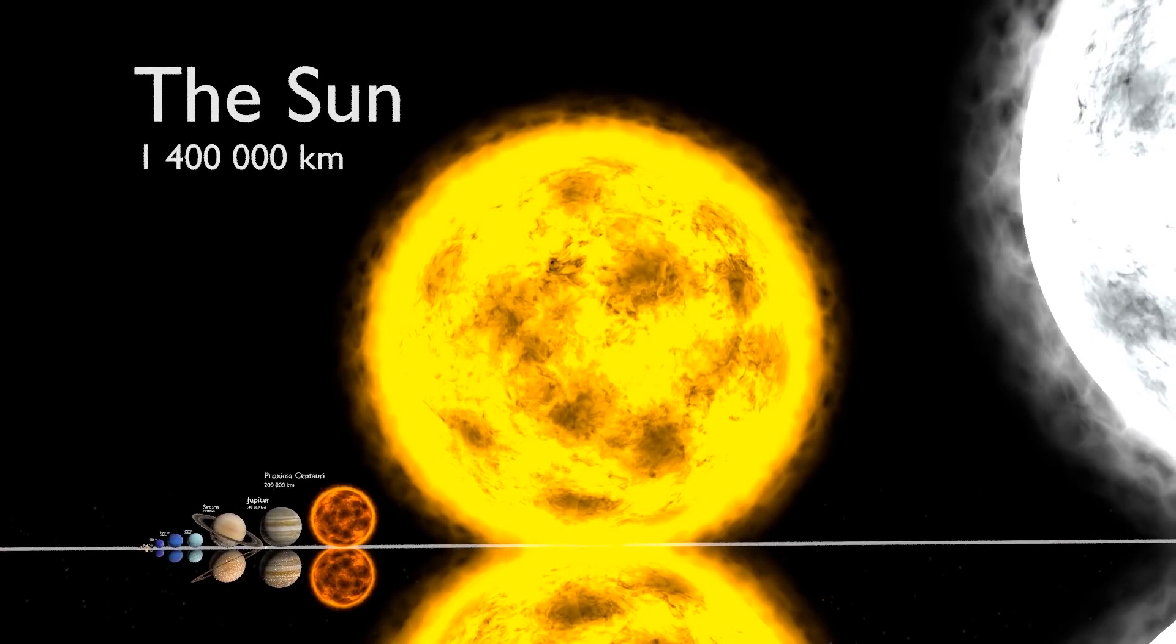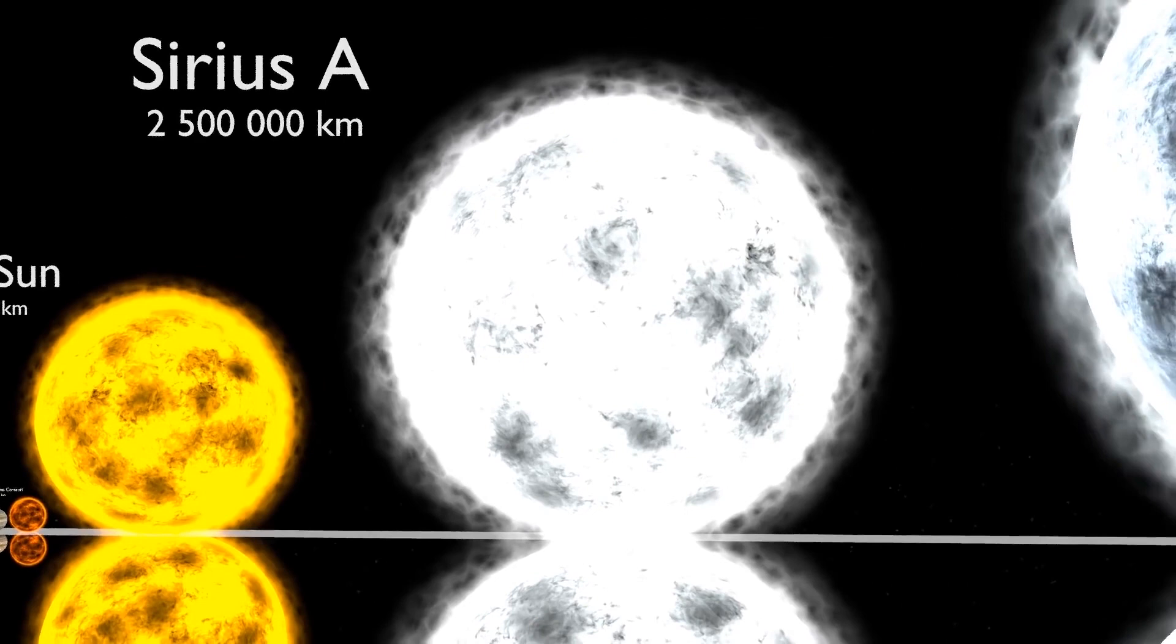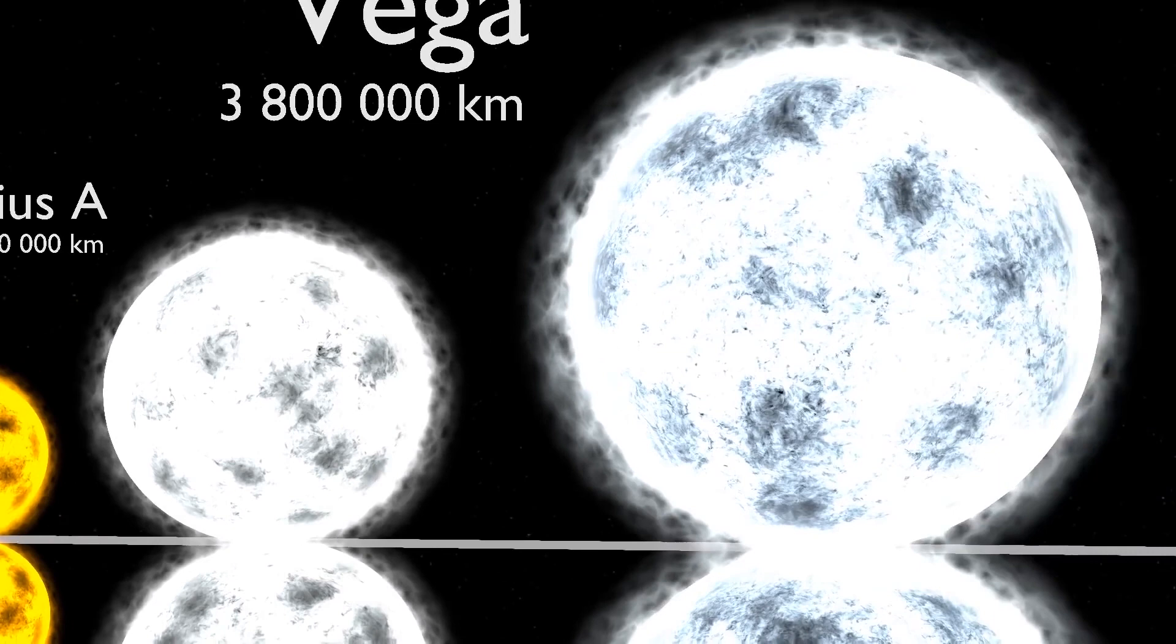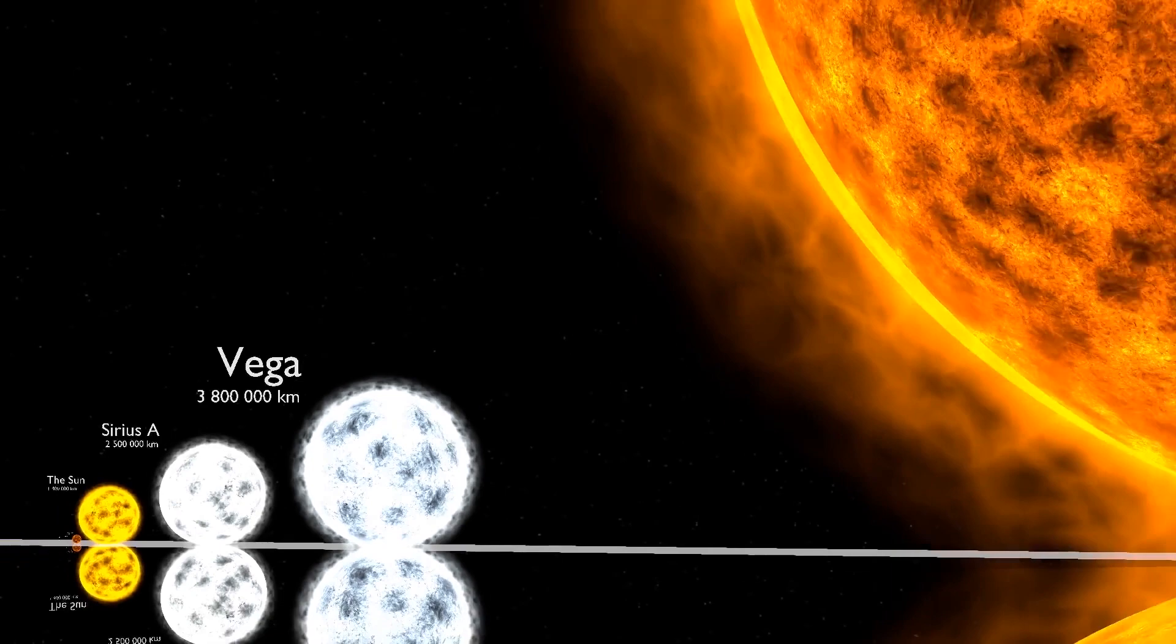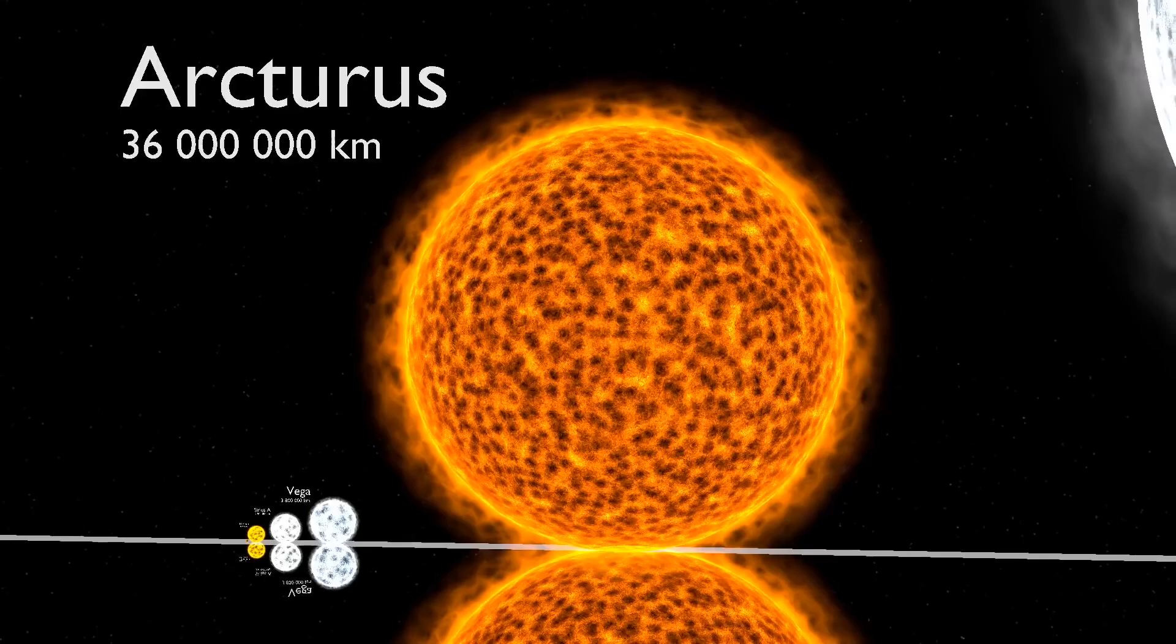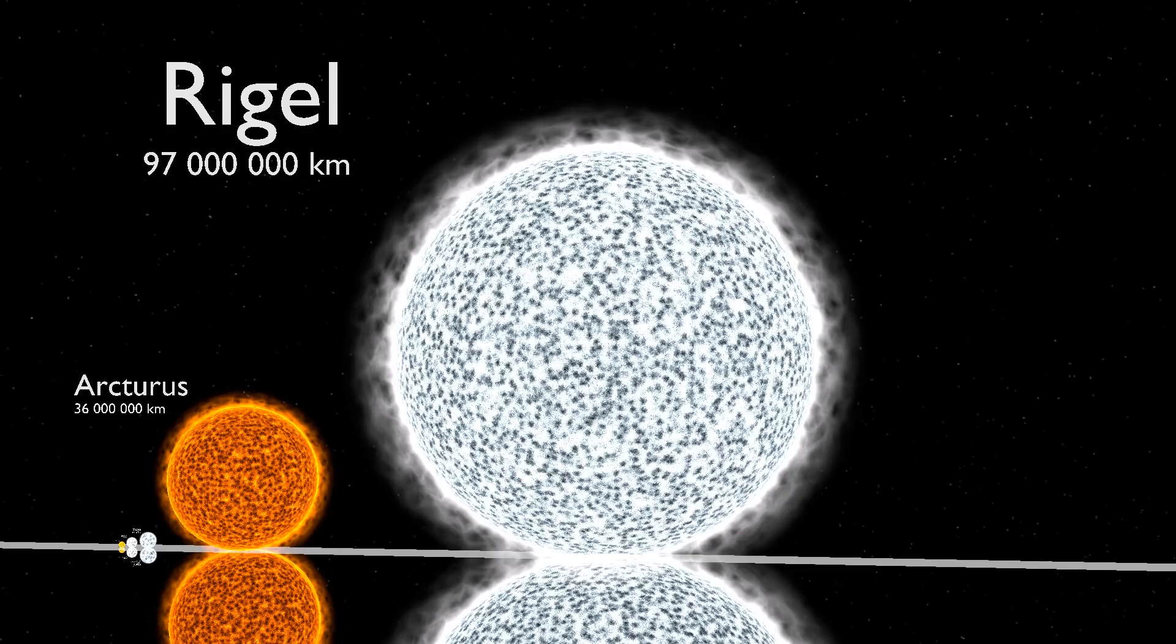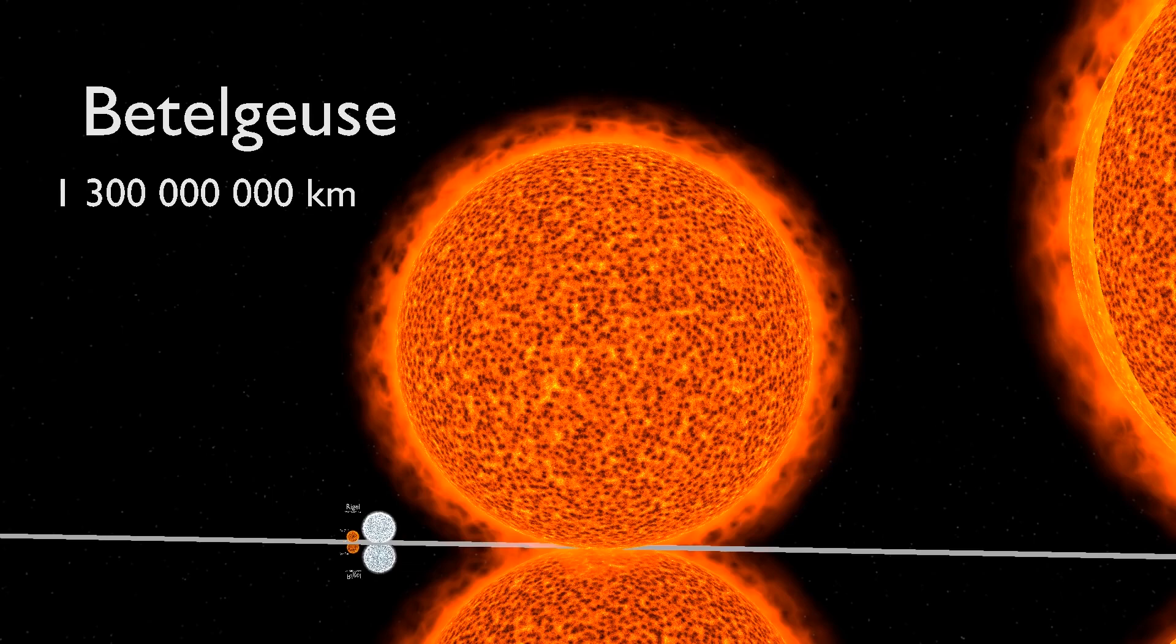Stars come in a wide variety of masses and sizes, from a bit larger than one-tenth the mass of the Sun to over a hundred times the mass of the Sun, from one-tenth the diameter to thousands of times the diameter of the Sun. But not all masses and sizes are equally likely. The vast majority of stars have masses smaller than the mass of the Sun, while larger masses are much more rare. Stars with masses ten times the mass of the Sun are a thousand times more rare than the Sun.